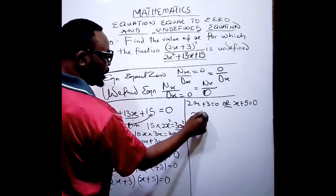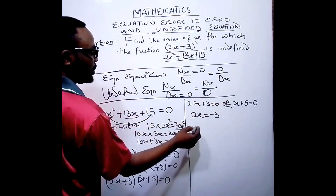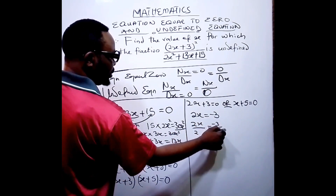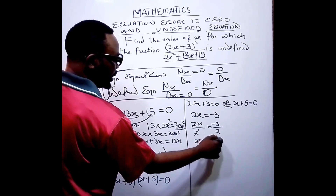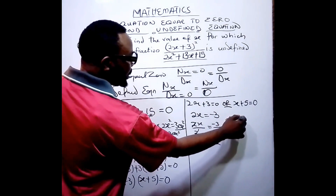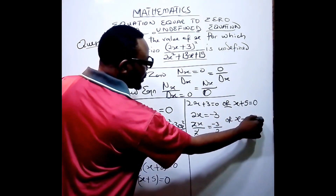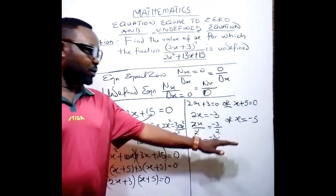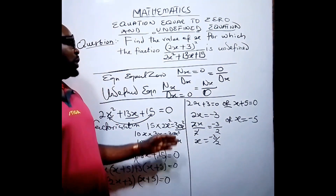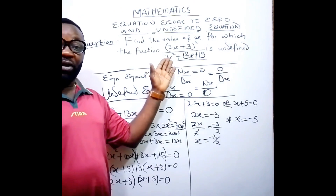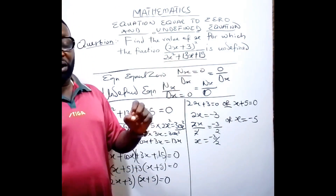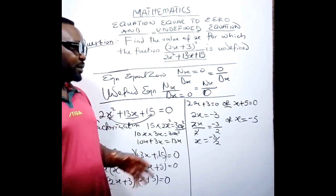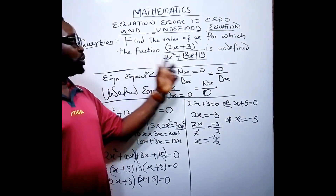Solving 2x + 3 = 0 gives 2x = -3, and dividing both sides by 2 gives x = -3/2. Or, solving x + 5 = 0 gives x = -5. So we have been able to get the values of x. If you insert each of these values into the denominator, and the result equals zero, that value makes the fraction undefined.